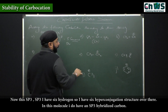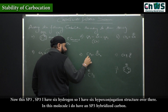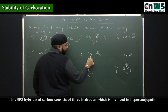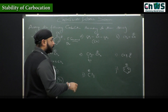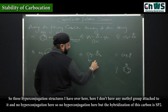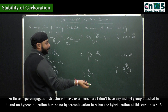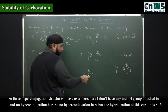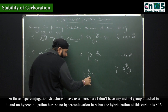Again I do have an sp3 hybridized carbon. This sp3 hybridized carbon consists of three hydrogens which will be involved in hyperconjugation, so three hyperconjugation structures I have here. For this next carbocation, I don't have any methyl groups attached to it and no hyperconjugation here.